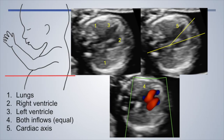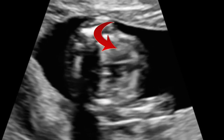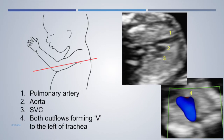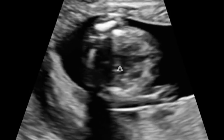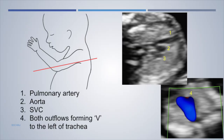Moving to the chest, we see two lungs, the right ventricle, and the left ventricle. On color Doppler, both inflows should be equal in size, and the cardiac axis can be assessed. In the upper mediastinum, a three-vessel view shows the pulmonary artery, aorta, and SVC along with the trachea. On color Doppler, both outflows form a V to the left of the trachea.